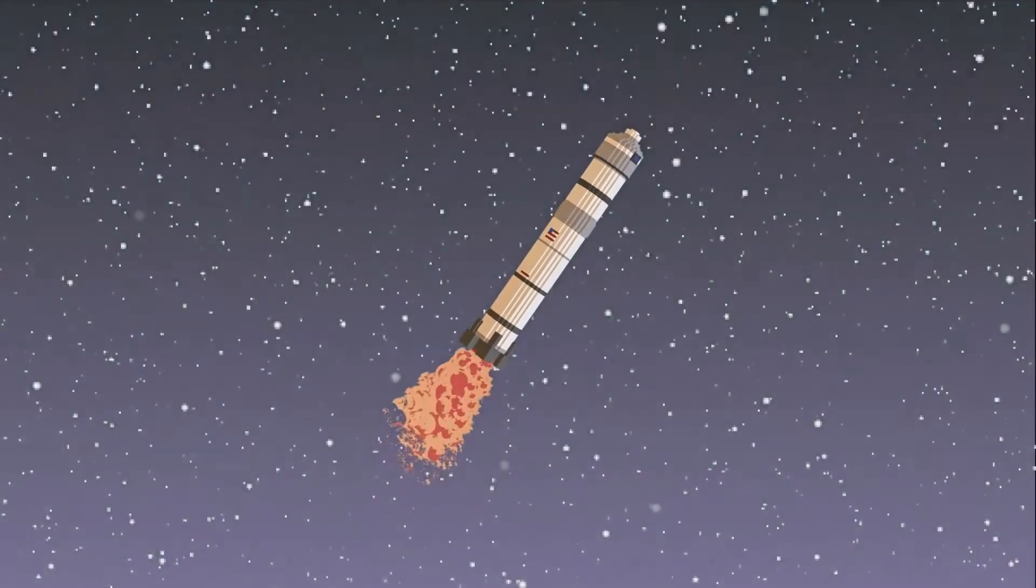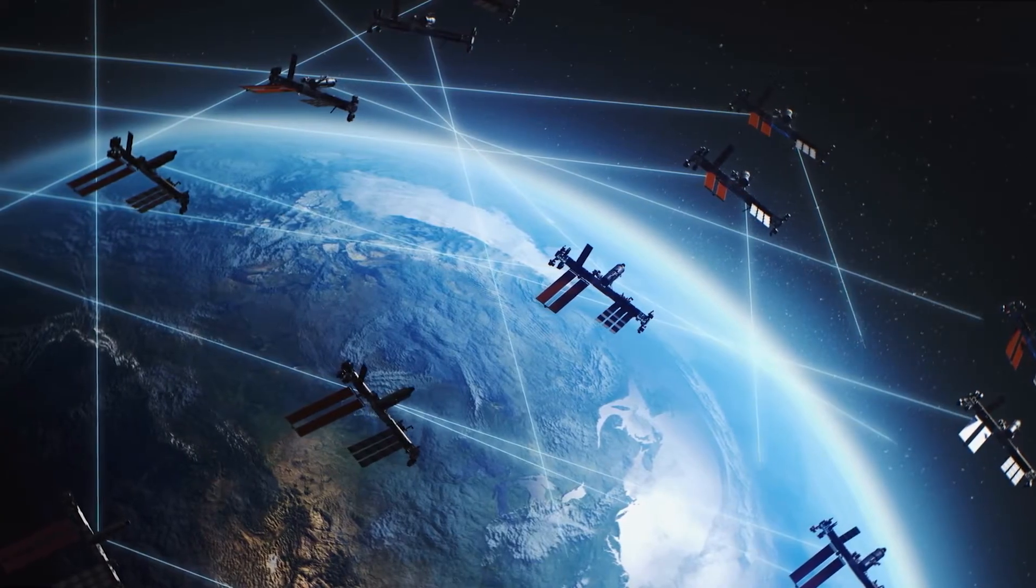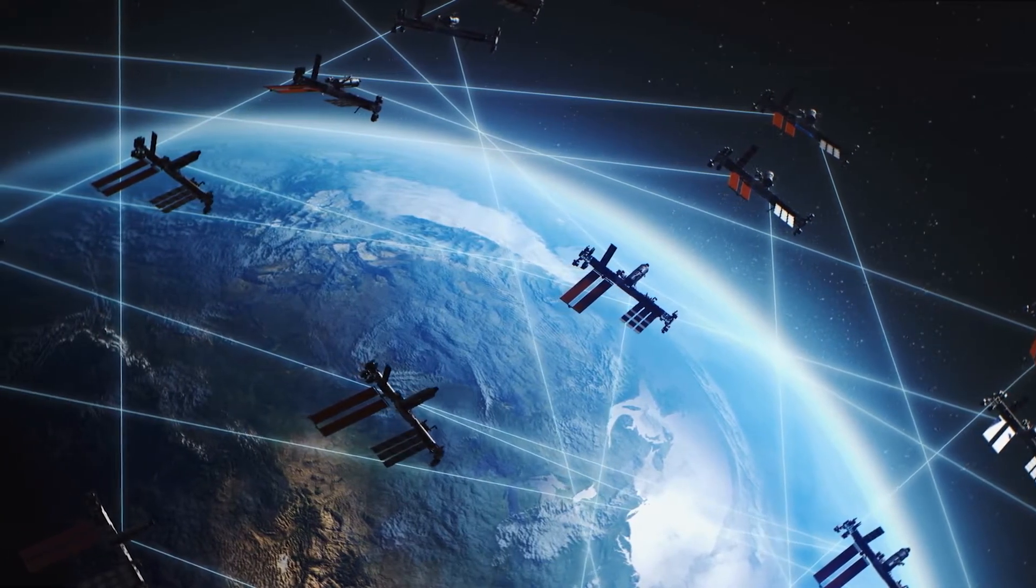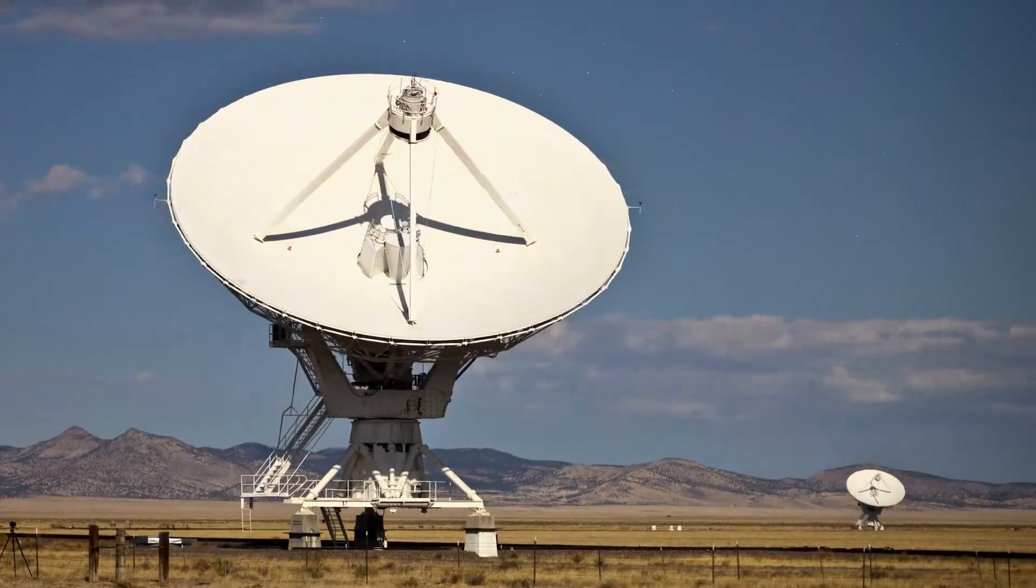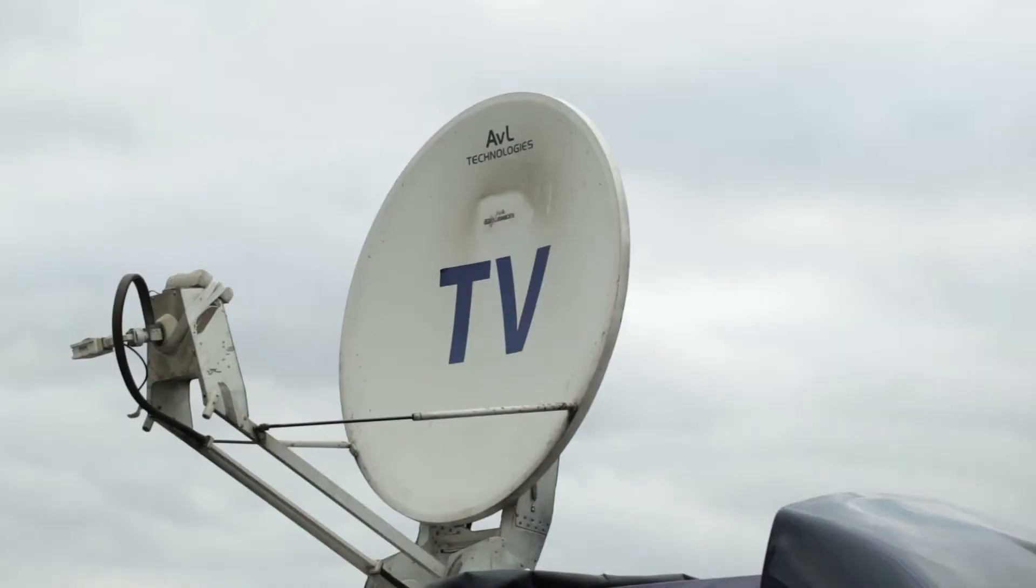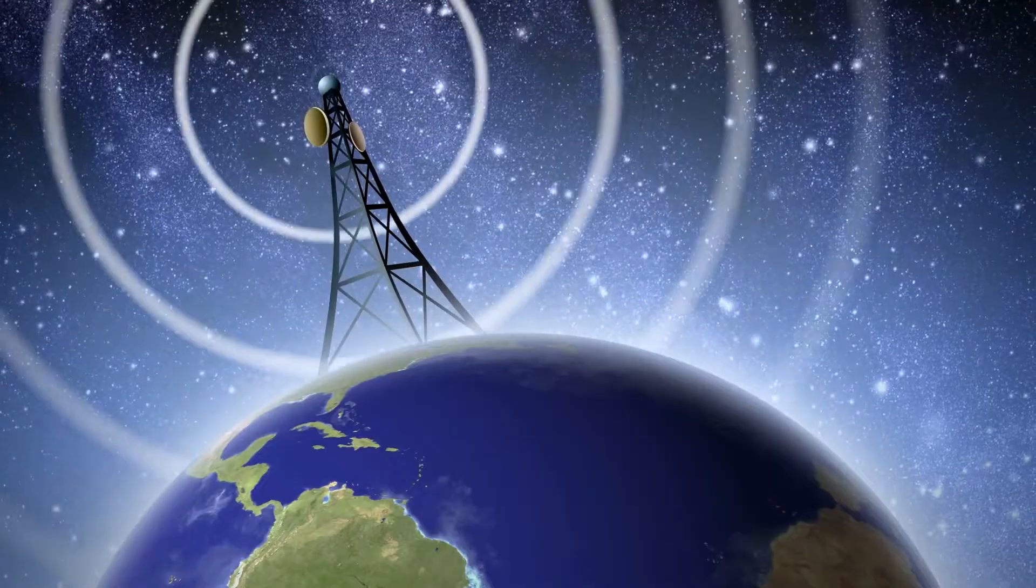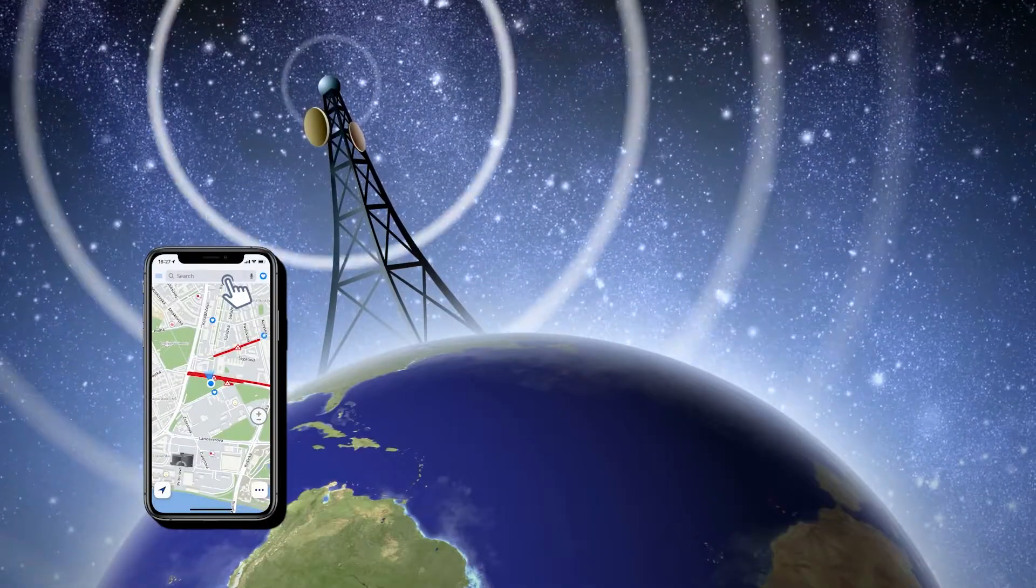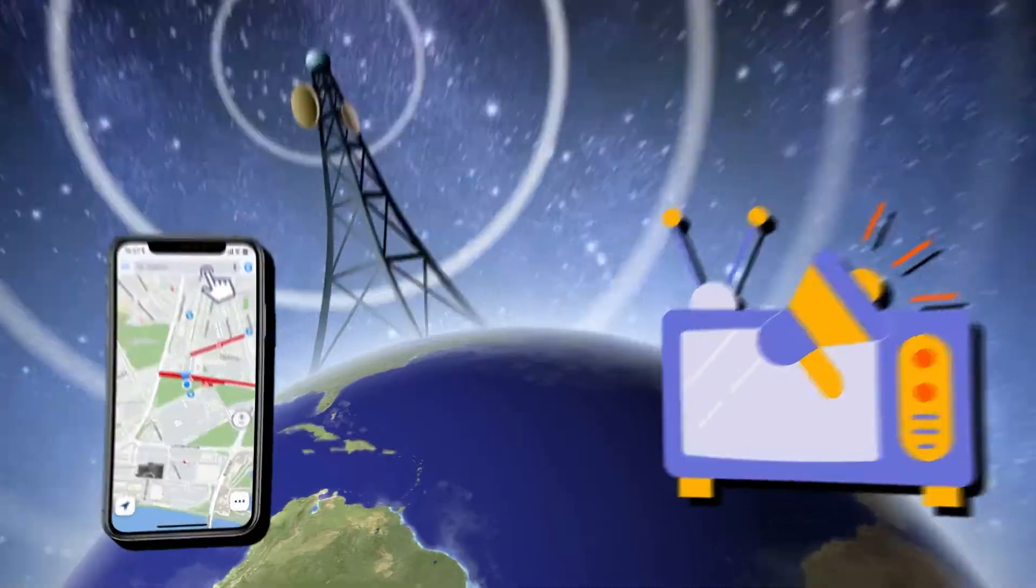Satellite communication encompasses a diverse array of methods, including not just sophisticated ground stations and transmitters, but also accessible options like regular TV antennas. This variety in technology facilitates a wide range of transmissions, from GPS navigation on your phone to live international broadcast.